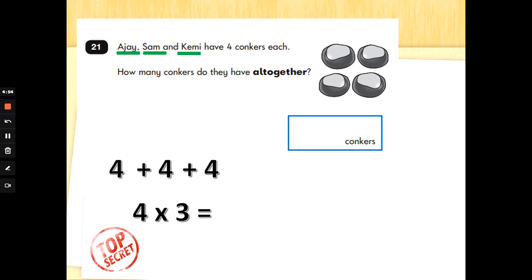And you clever people amongst you will know that 4 add 4 add 4 is the same as 4 times 3. Okay. 12 conkers all together.